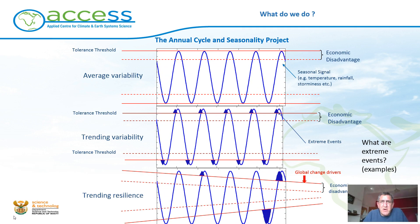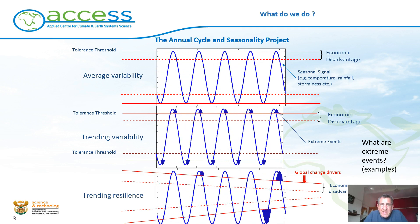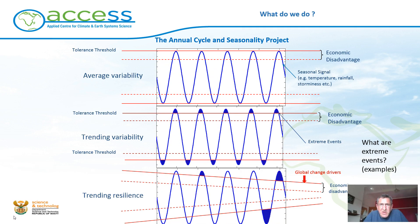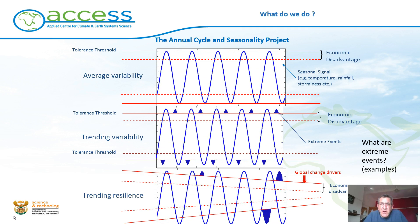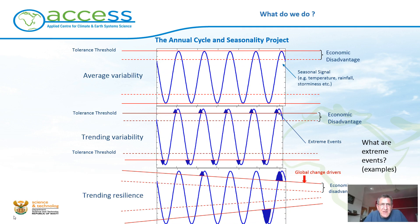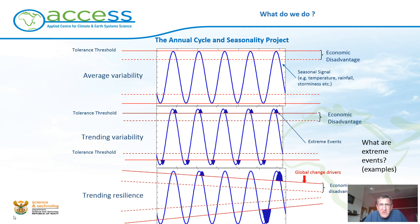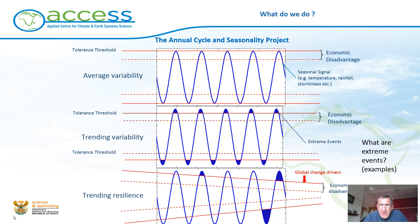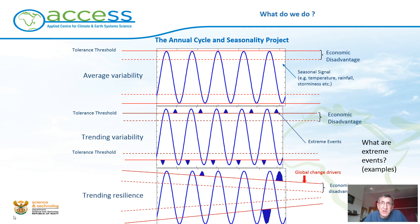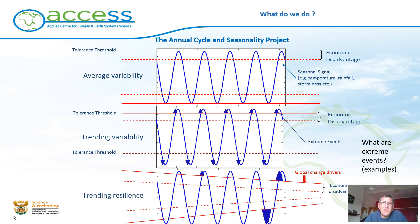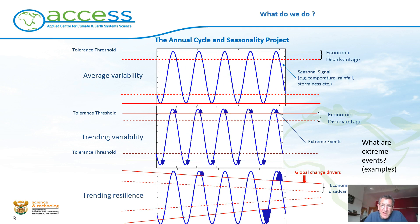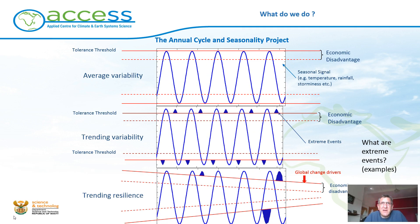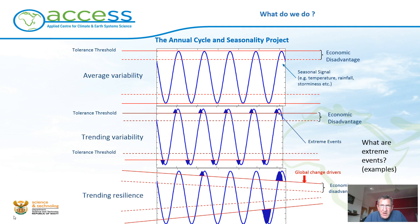The focus of the ACCESS program's research is on the annual cycle of climate. If you look at that top graph, you can see a typical average seasonal signal of rainfall or temperature. We're used to the kinds of winters and summers we know. But looking at the middle panel, what you see are extreme events which happen occasionally. We've had the El Niño of 2015–16 which caused a massive drought in the north, and the drought in the Western Cape — these are extreme events where the climate signal exceeds what we're typically used to.